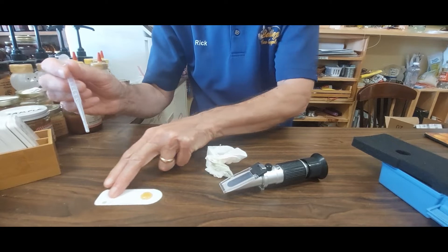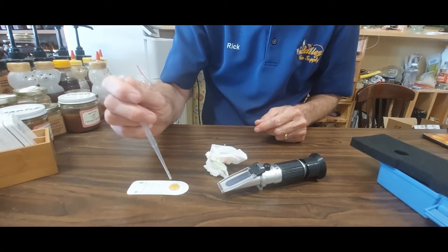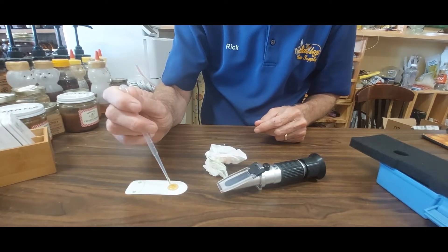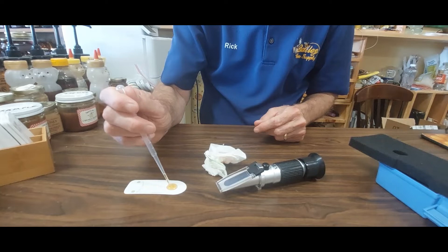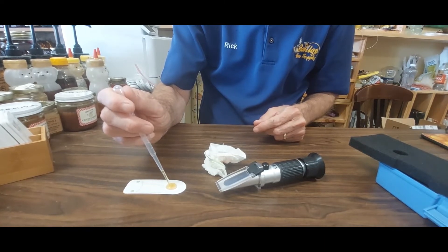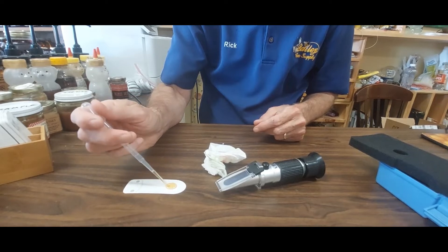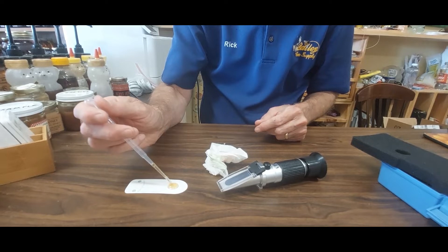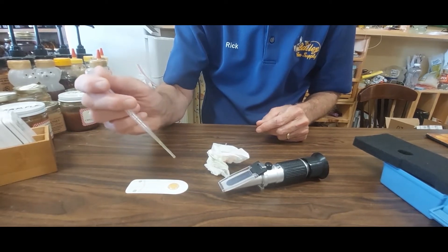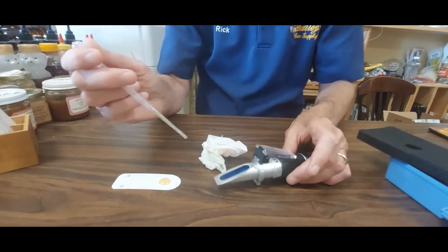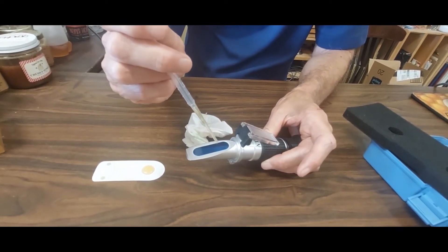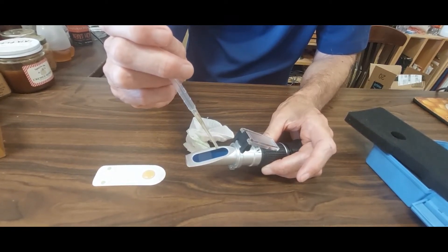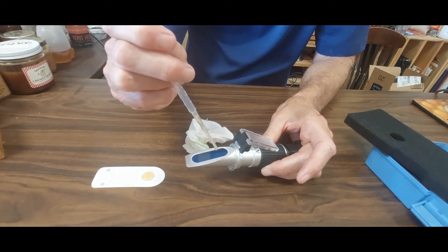I've got a honey sample here, and I'm going to use the little dropper to suck up my sample. It doesn't take an awful lot. Should be enough there. Open it up. Probably a couple of drops. And I believe this honey may have been too thick to do this.